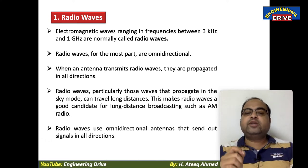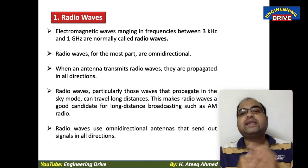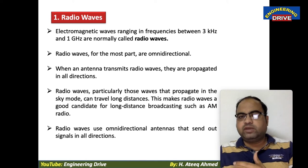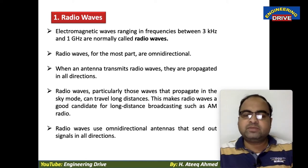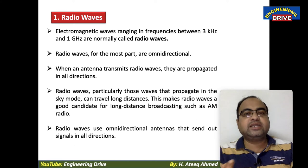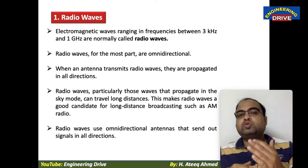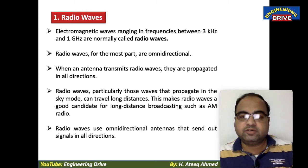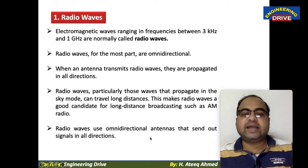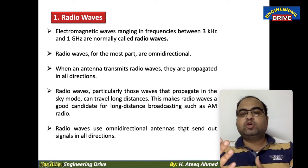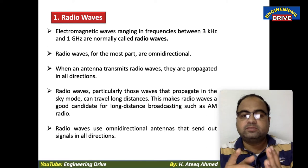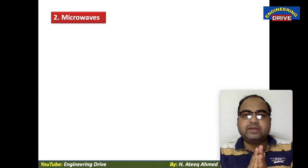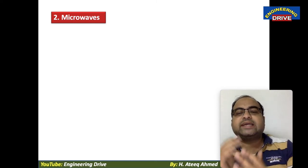Radio waves use omnidirectional antennas that send out signals in all directions. To transmit radio waves we must use an antenna — specifically designed omnidirectional antennas that transmit radio waves in all directions. This is the unique feature of these antennas.